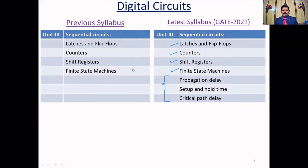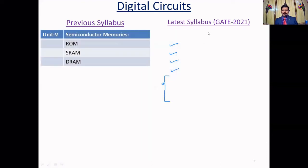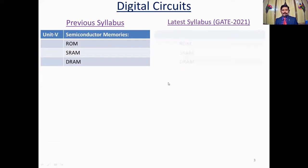In the fourth unit, data converters, sample and hold circuits, ADCs and DACs are all the same — they are not changing unit four. Coming to the fifth unit, ROM, SRAM, and DRAM are also the same with no changes.